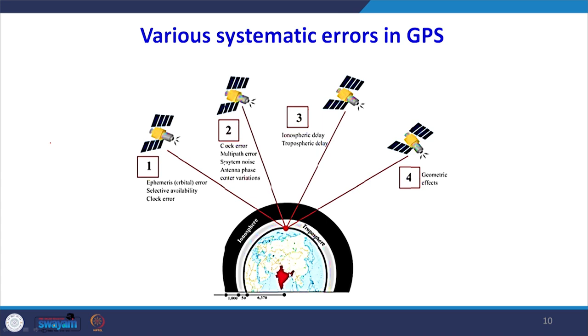For systematic errors, there are various categories we would like to model, determine, and take steps to minimize. Number 1: ephemeris or orbital error and clock error. Number 2: multipath error, system noise, and antenna phase. Number 3: atmospheric — ionospheric delay and tropospheric delay, since the signal traveling from source to receiver experiences some delay. Then there is the geometry of the satellites — a group of satellites forming a network — these are the systematic sources of errors.